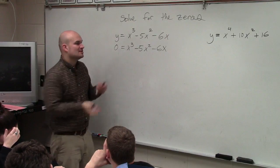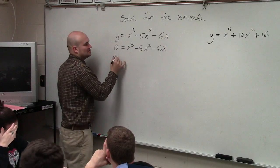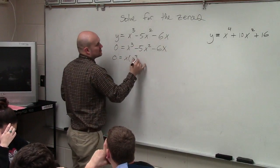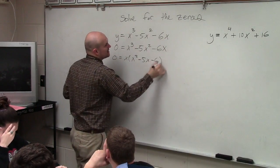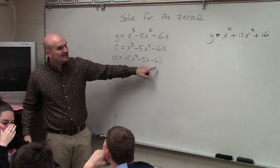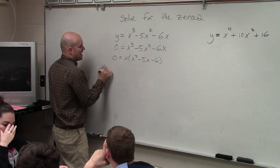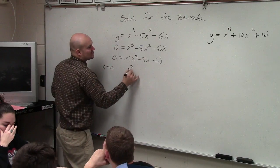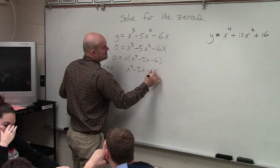X. So I'm going to factor out the x. So 0 equals x times x squared minus 5x minus 6. And what's nice about that now is you guys can see, now I have a product equal to 0. So I can say x equals 0 and x squared minus 5x minus 6 equals 0.